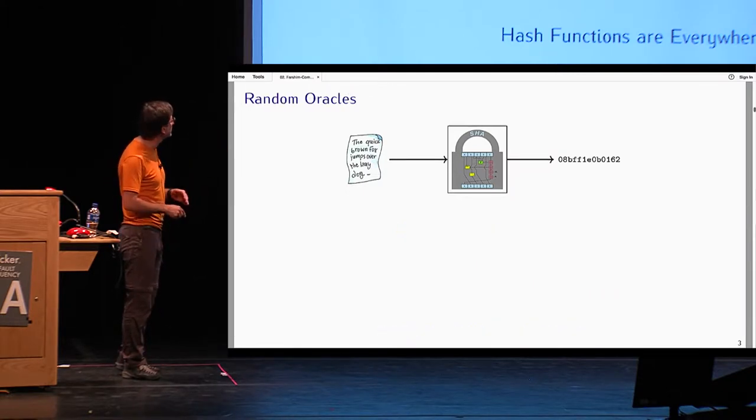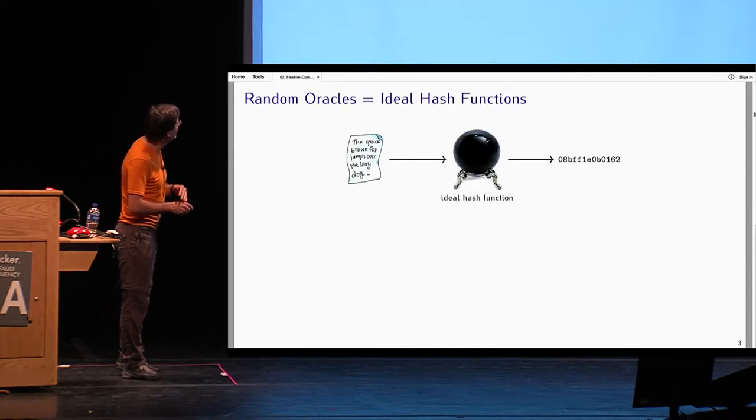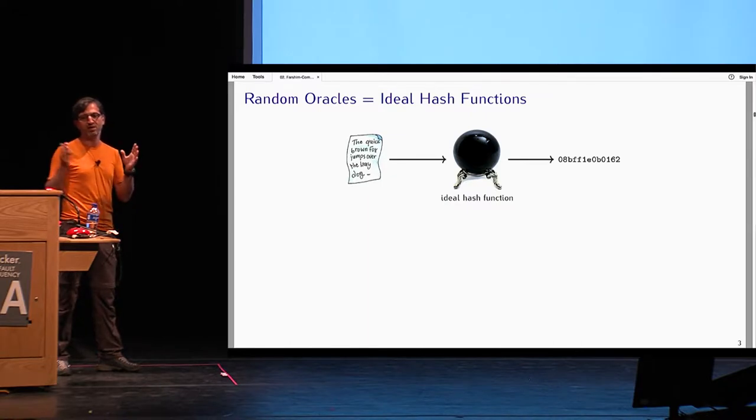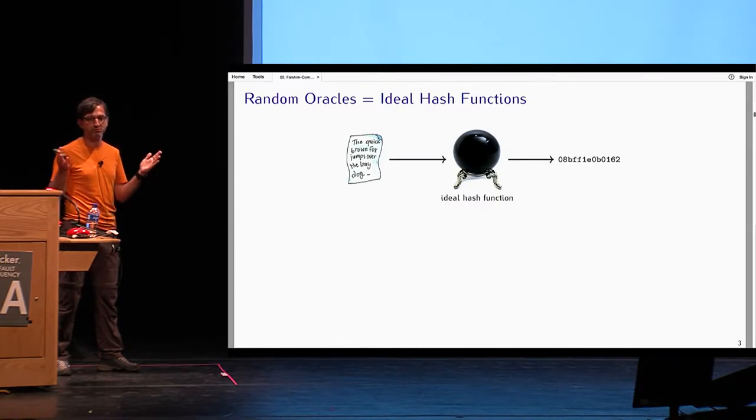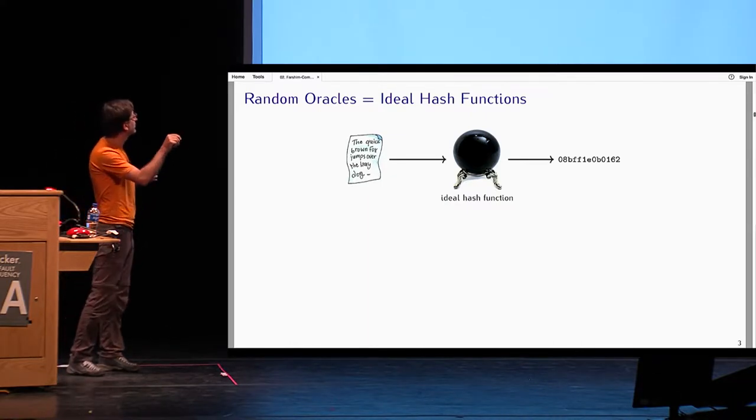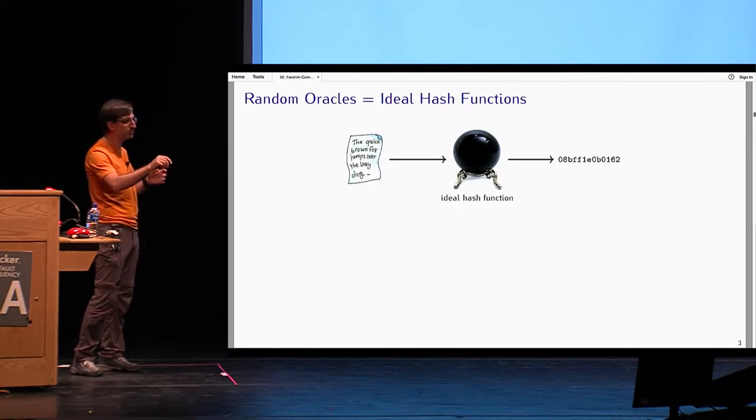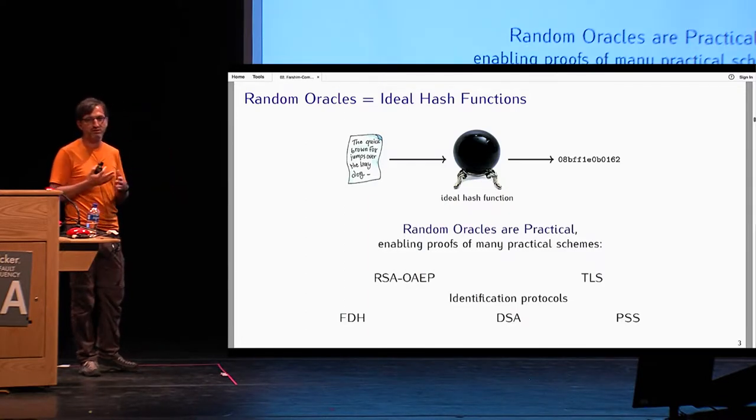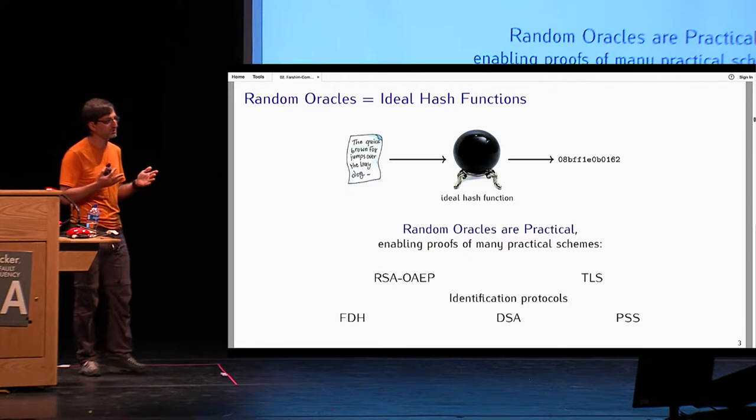One response to this has been the introduction of the random oracle model, where we assume that the hash function is behaving like a truly random function. That is, whatever input you put here, you get a totally independent and random looking output.